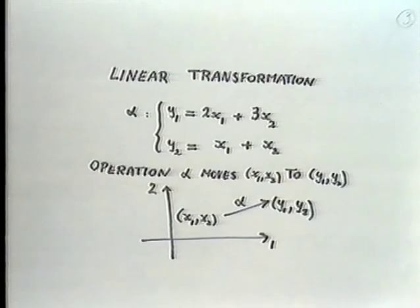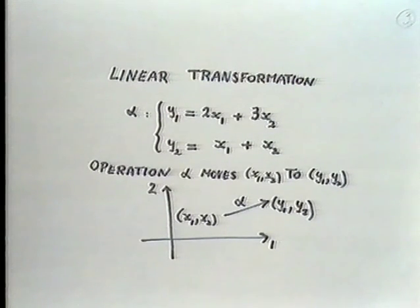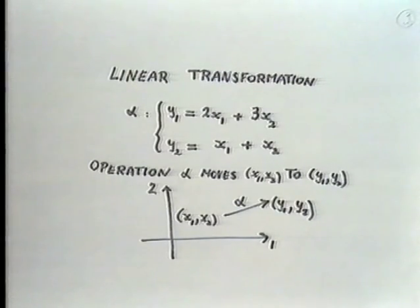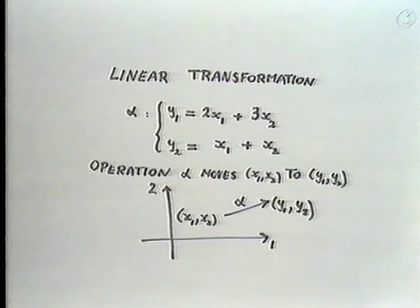So let us then start as Cayley did, by considering some equations which we call linear equations. I've taken here as an example two equations in two unknowns x1 and x2. Cayley in his paper used three unknowns and three equations, but the ideas are much the same as for the 2×2 case. Here we have a set of equations where y1 is equal to 2x1 plus 3x2, and y2 is x1 plus x2. We can regard this as an operation which moves point x with coordinates x1, x2 to a point y with coordinates y1, y2 in a plane, and we call this operation alpha.